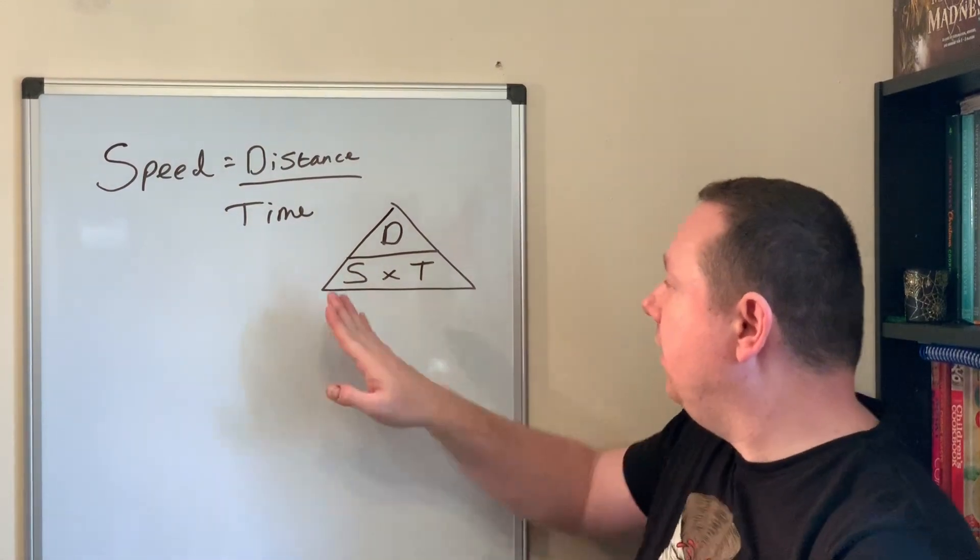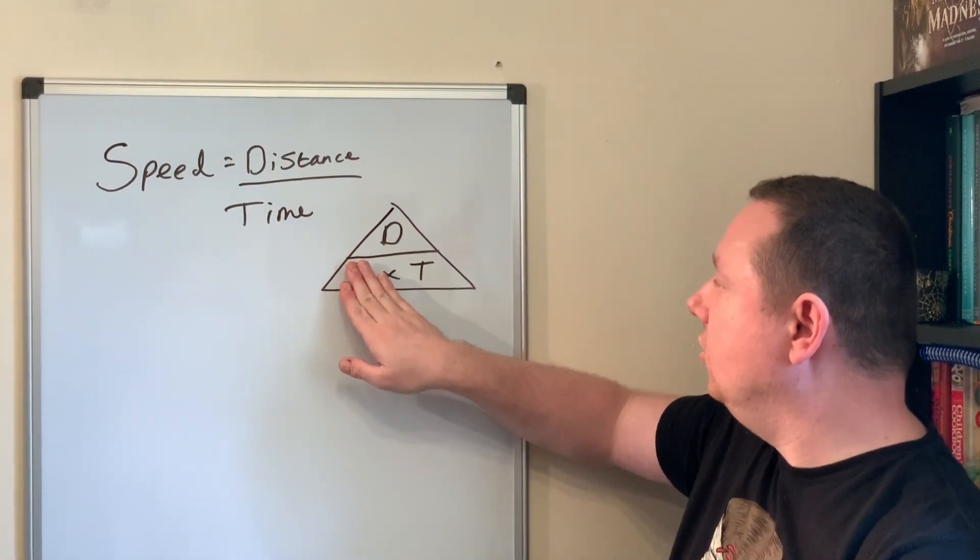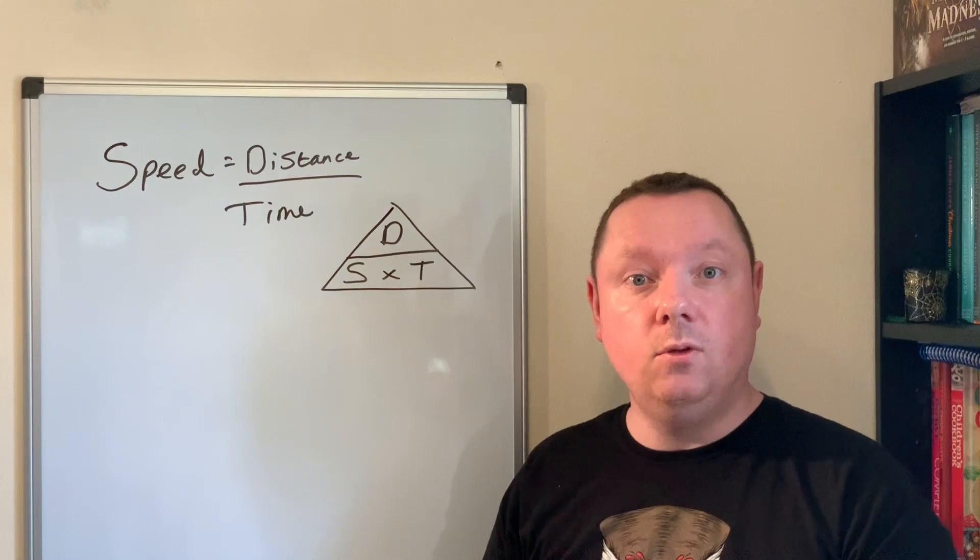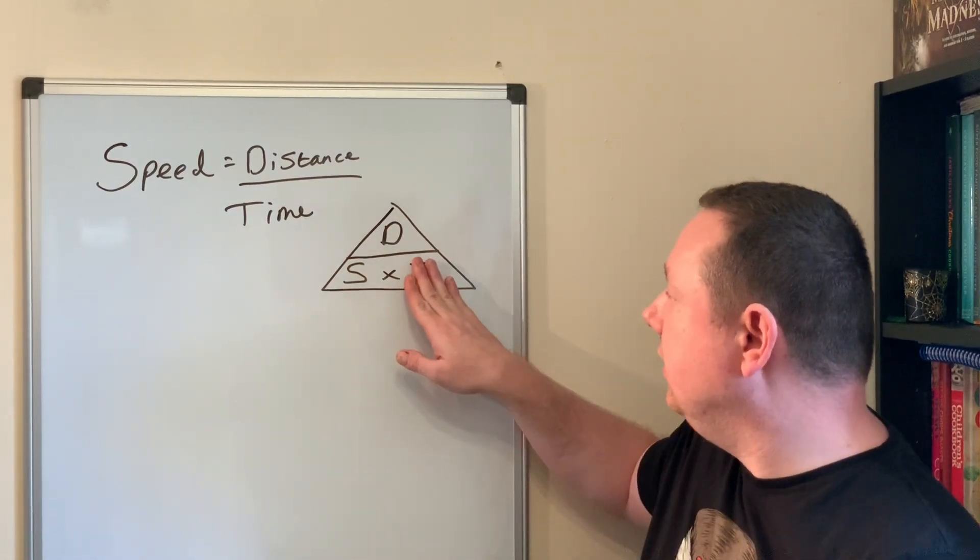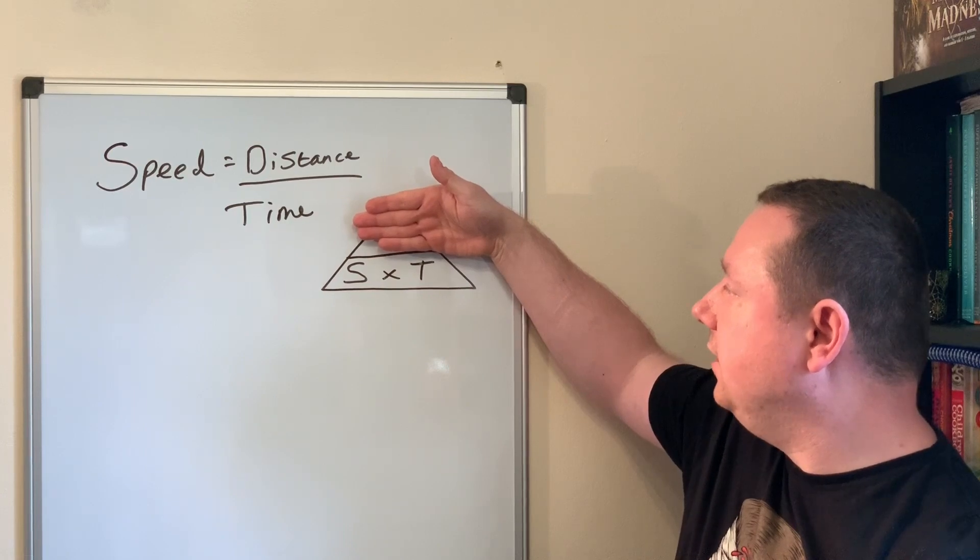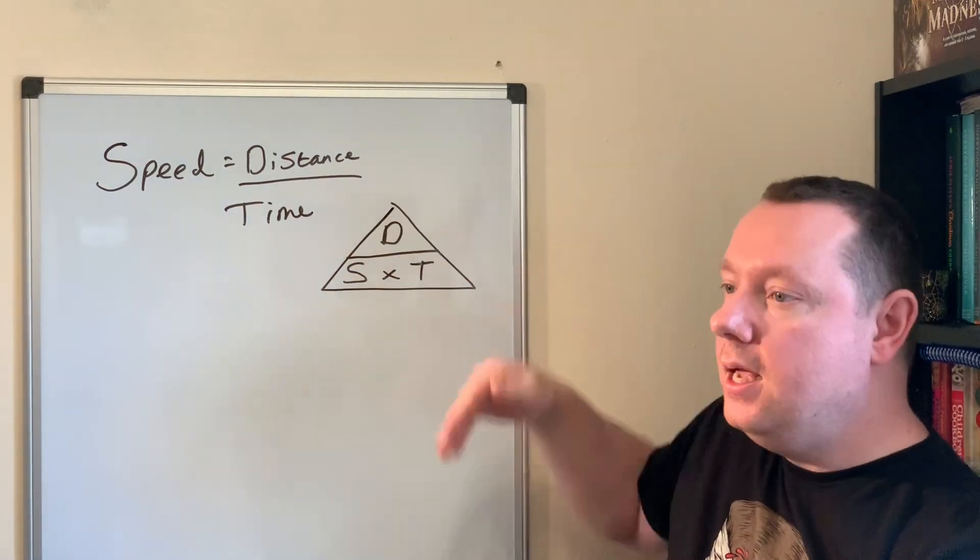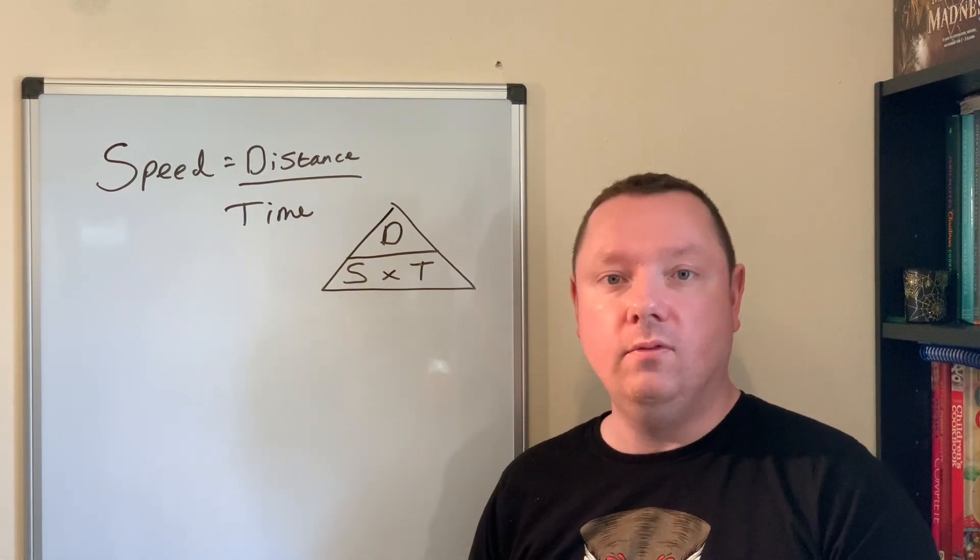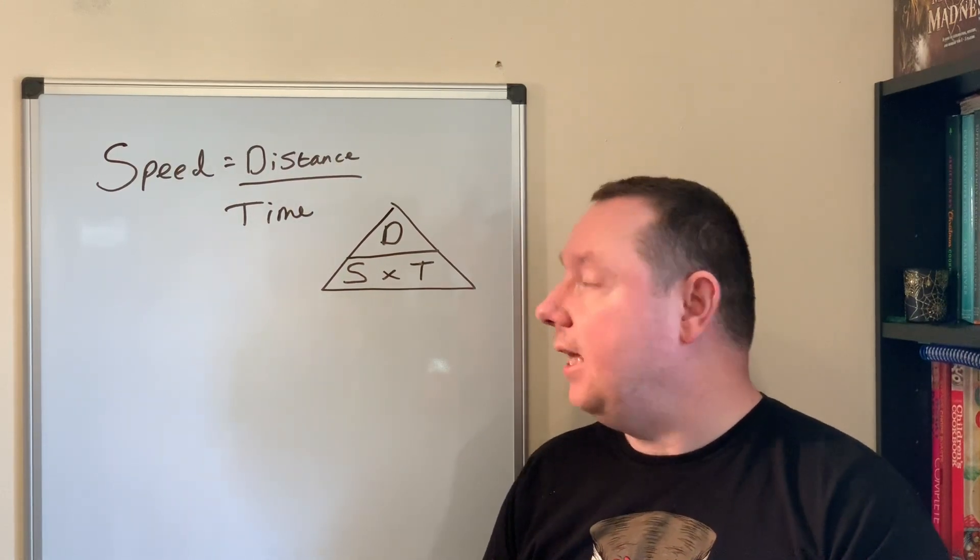S times T. If I want to work out speed, I cover it up and it says distance over time. If I want time, it's distance over speed. If I want distance, I get speed times time. We're going to use all three of these to calculate distance, speed, and time.